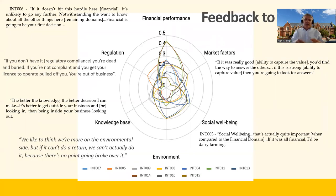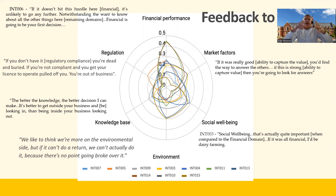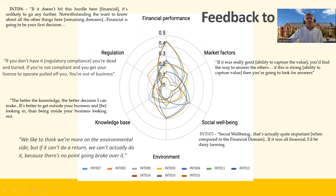Here we see the orange lines representing the average for all respondents, and this is the individual person. We can see they put much more weight on return on investment than the average, which can prompt a discussion. Here, they follow quite closely the average for social and the environment, but are more concerned with greenhouse gas emissions than the average — just ways of presenting results that can prompt further discussion or reflection in the person's mind.